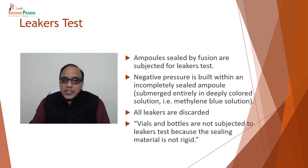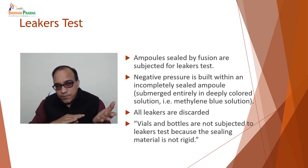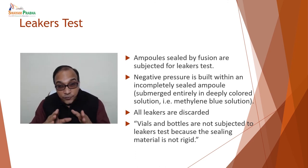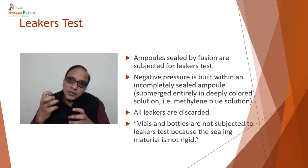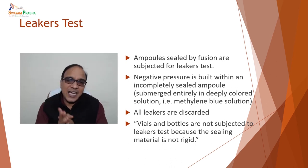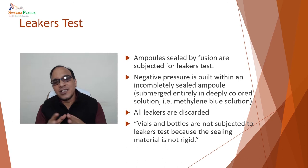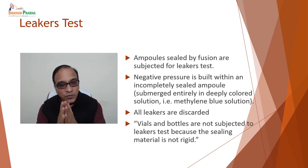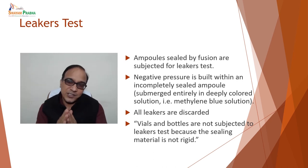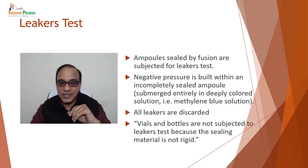After the particulate test, we move to the leaker test. Ampoules sealed by fusion are subjected to the leaker test. A negative pressure is built within an incompletely sealed ampoule submerged entirely in a deeply colored solution such as methylene blue solution, and all leakers are discarded. Please note that vials and bottles are not subjected to the leaker test because the sealing material is not rigid in these cases.